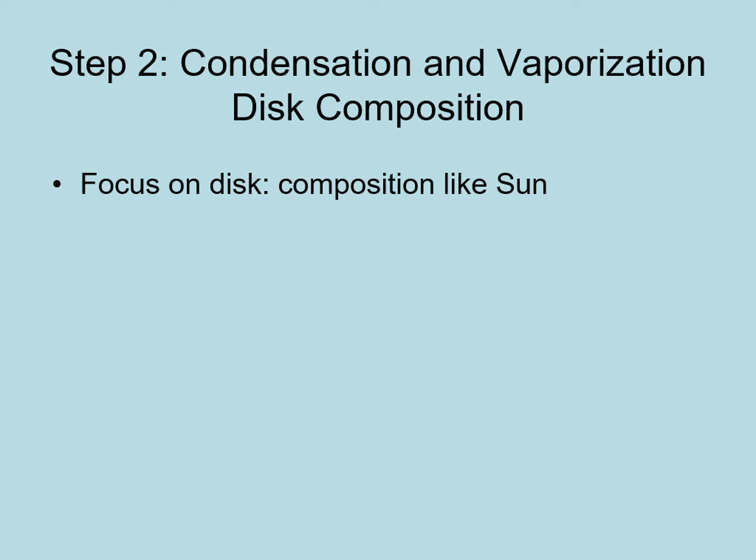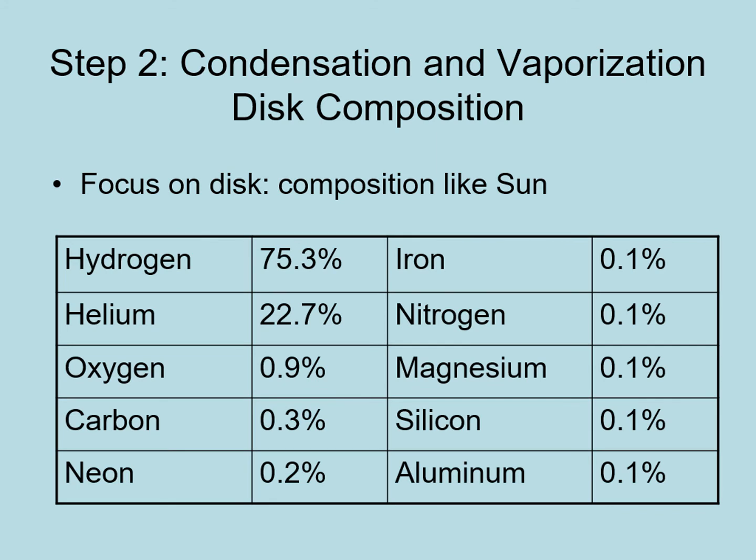The next step in the formation of our solar system is the condensation and vaporization of solids. To understand this, we need to look at what the disk is made of. At this point, there's no reason for the disk to be made of different materials than the sun. The sun has most chemical elements represented, but most make up less than one-tenth of one percent of its mass. The ten most abundant elements are listed below, and notice that hydrogen and helium completely dominate — all other elements combined are only two percent of the total.